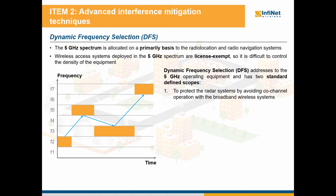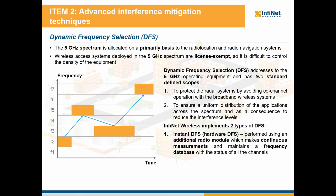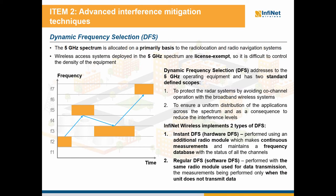Therefore DFS has the following standard defined scopes: first, to protect the radar systems by avoiding co-channel operation with the broadband wireless systems — to be mentioned that the radars send powerful narrow pulses that are not correlated with the wireless system signals; and the second is to ensure a uniform distribution of the applications across the spectrum and therefore to reduce the interference level. Infinite Wireless implements two types of DFS: instant DFS or hardware DFS, which is performed using an additional radio module that makes continuous measurements and maintains a frequency database with the status of all the channels; and regular DFS or software DFS with no additional radio module, where measurements are performed only when the unit does not transmit any data.